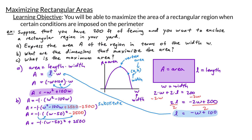Now our quadratic is in standard form and we can read off the vertex. The first coordinate of the vertex is the number inside the square with its sign flipped — since we have negative 50, the first coordinate is positive 50. The second coordinate is the number at the end: 2500. The first coordinate tells us the width and the second coordinate tells us the area, so when the width is 50 feet, we have the maximum area of 2500 square feet.